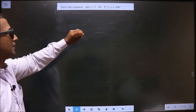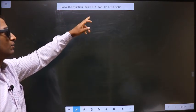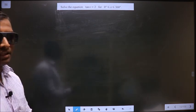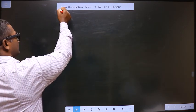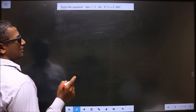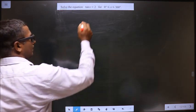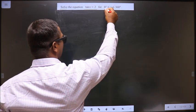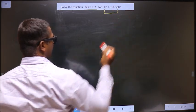Solve the equation tan x equals 2 for x lies between 0 to 360 degrees. They told you to solve, so you need to find the values for x satisfying this equation and also lying in this interval.